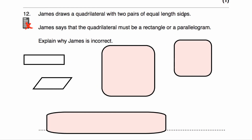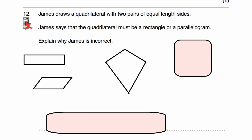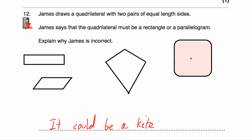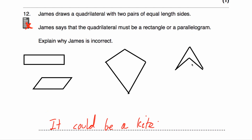Question number twelve. James draws a quadrilateral with two pairs of equal length sides and says it must be a rectangle or parallelogram. Explain why James is incorrect. It could also be a kite — a kite has two pairs of equal length sides (the two top sides equal each other, and the two bottom sides equal each other). It could also be a delta shape. So James is incorrect.